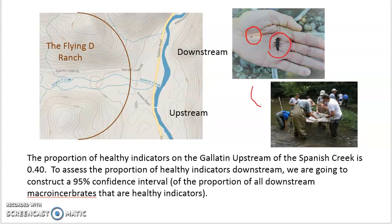We collected a sample of bugs using seine nets. And then what we did is we constructed a confidence interval of the proportion of healthy indicators downstream. Upstream, recall that the proportion of healthy bugs was 0.4 or 40%.